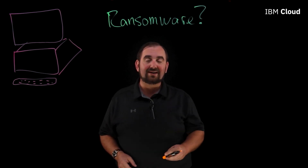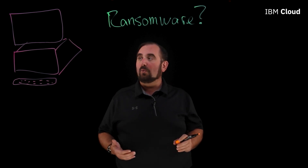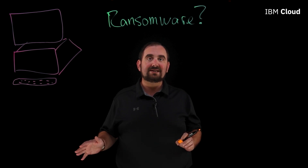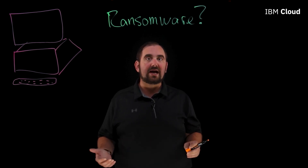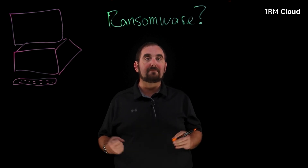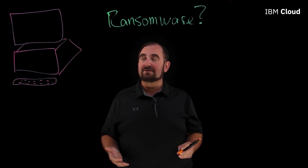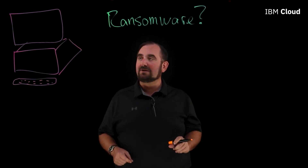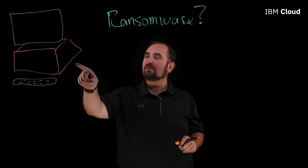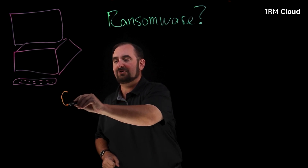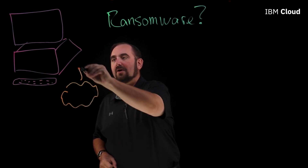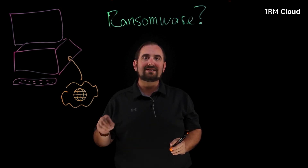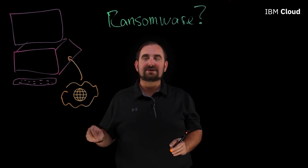When one of these vulnerabilities is discovered, what a malicious actor will do is figure out: is this protected against? If it's not protected against, how can I exploit this? How can I use it to make money? Because at the end of the day, most of these malicious actors aren't doing it for fun — they're doing it to get paid. So what do they do? They take that vulnerability in your machine and transmit some software over the internet into the machine, and that software is then going to sit dormant and idle until it gets executed.